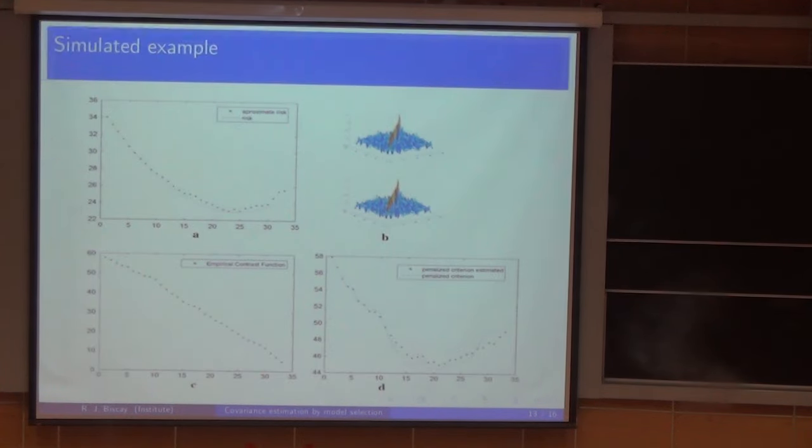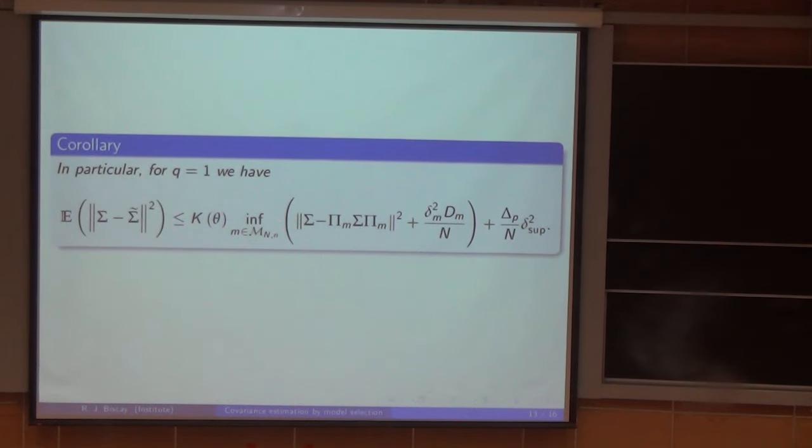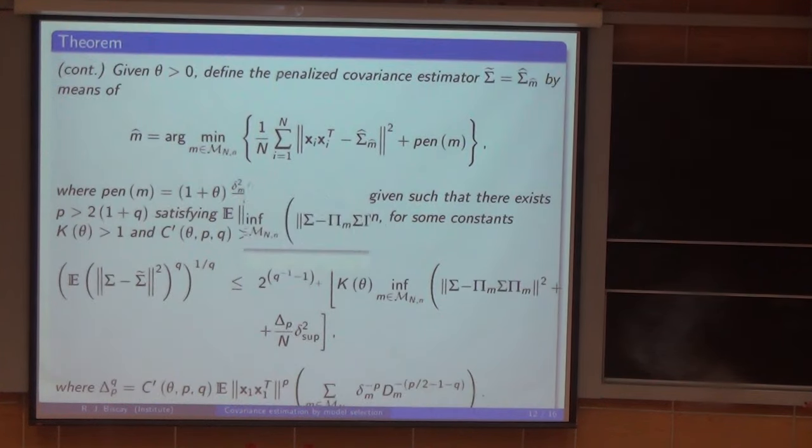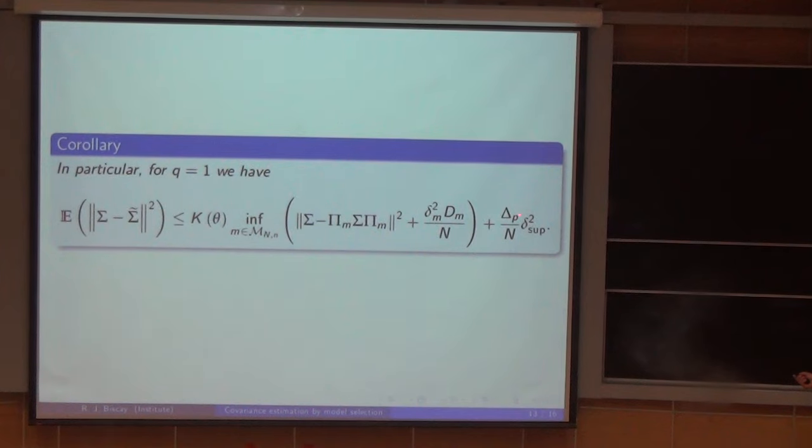This is a basic result. After that we extended this to using lasso, for example, as basis functions. Here is involved a parameter with the role of the variance, but it's not the variance, it's more complicated. This parameter depends both on the covariance matrix and the fourth moment matrix, and this parameter in practice is unknown. The question: can we extend this to the case in which we estimate this unknown parameter? This can be done. I'm going to show results in the reference that I mentioned at the beginning.